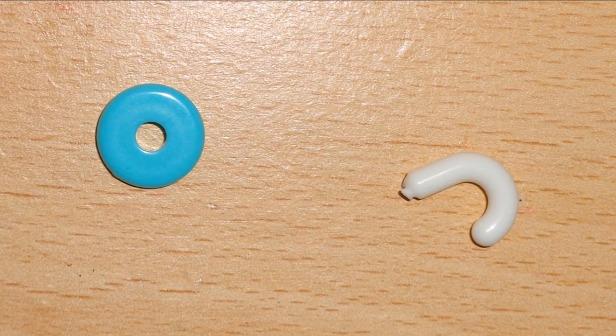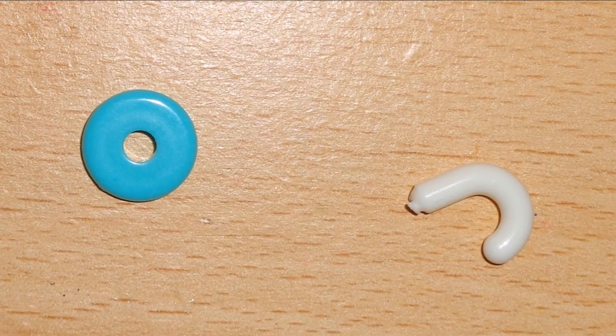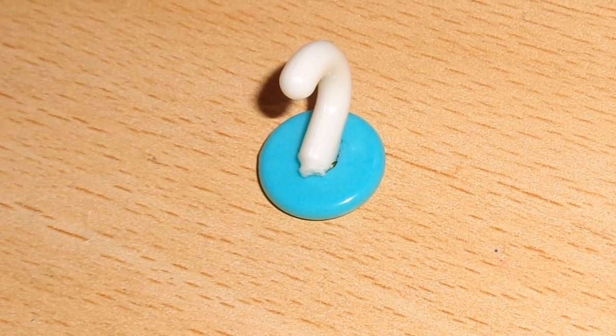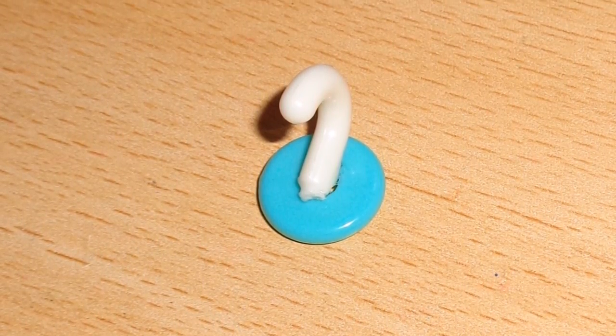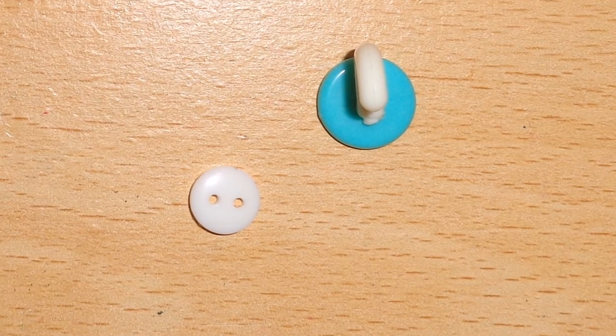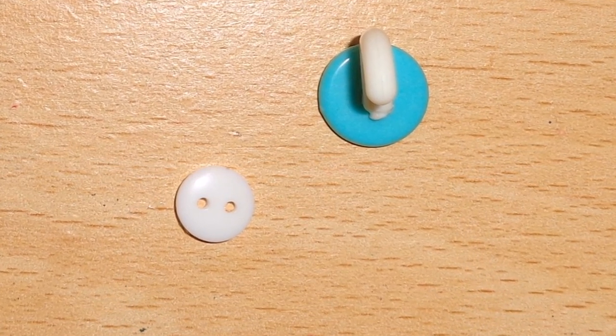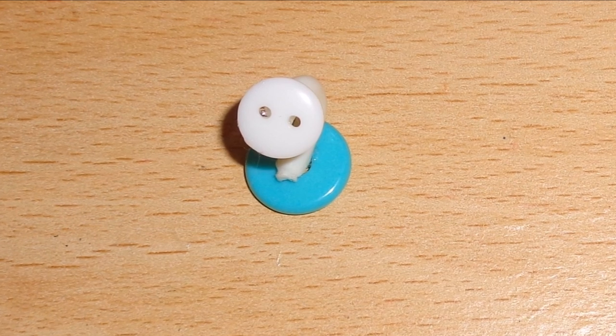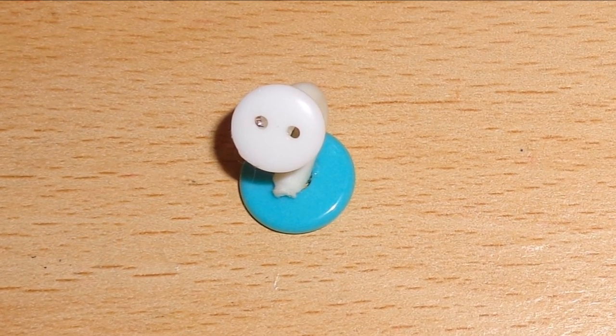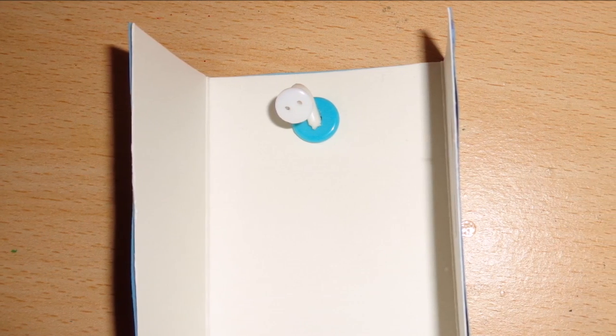To make a shower head, glue a hanger hook piece to a flat bead. Glue a button onto the hook. And then glue this onto the shower.